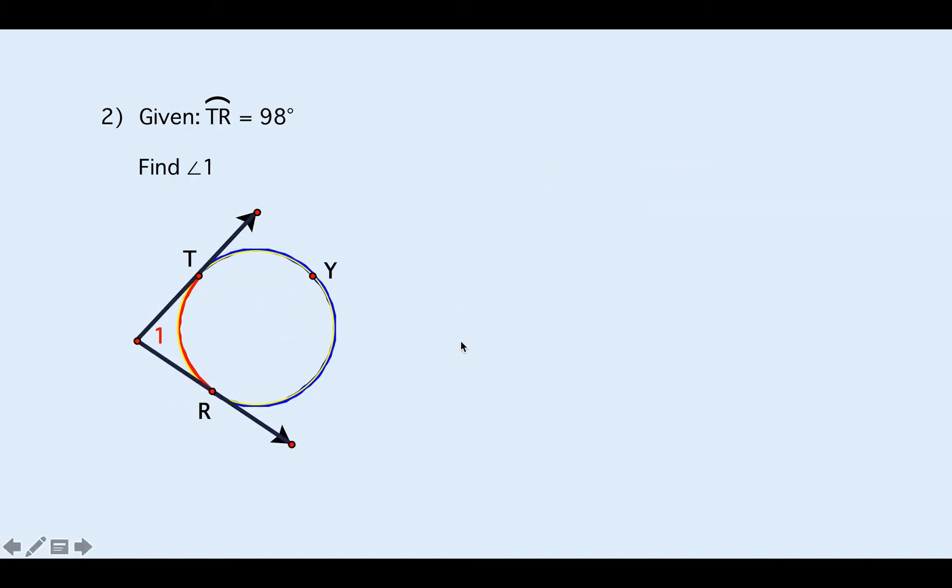Problem two, hit pause, see what you come up with. We're going to have angle one is equal to one half of the big arc TYR minus the little arc TR. Now this is a special case because they only give you one measurement there. But we know the two arcs of a circle add up to equal 360 degrees. So the first thing I should do is find out what that blue arc is by going 360 minus 98 which is 262.